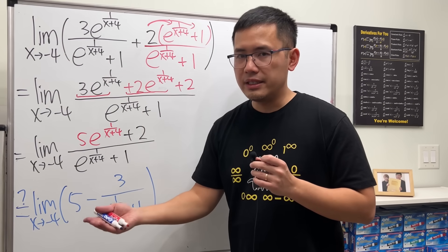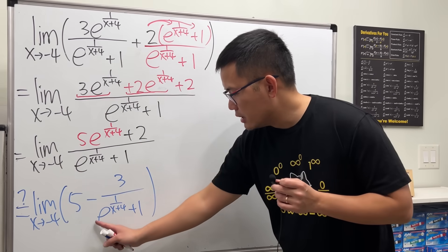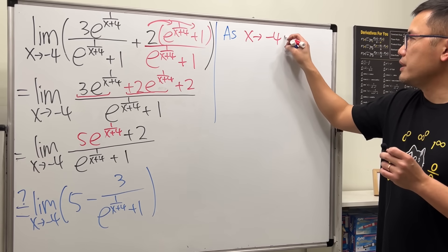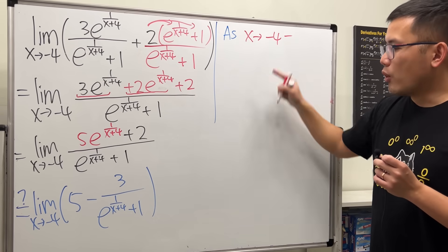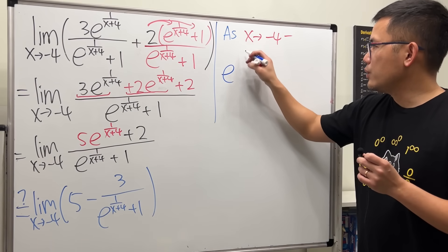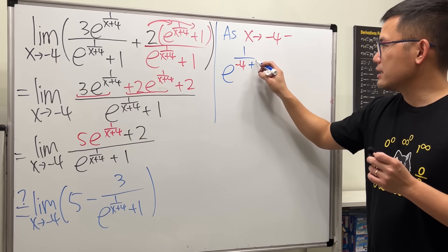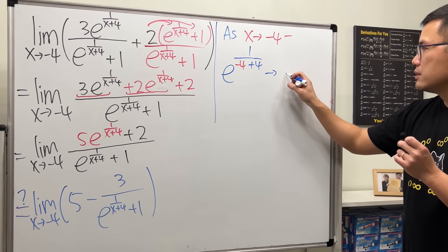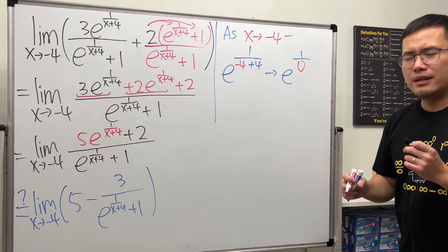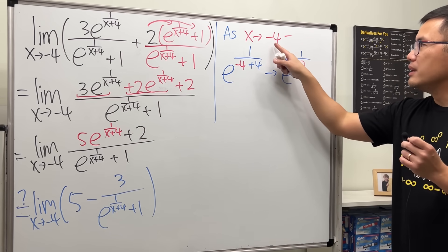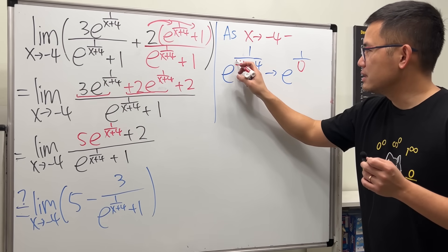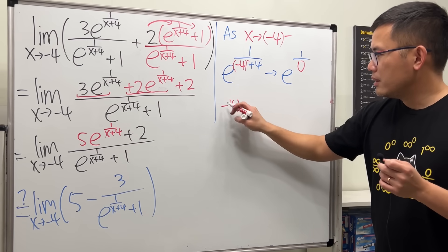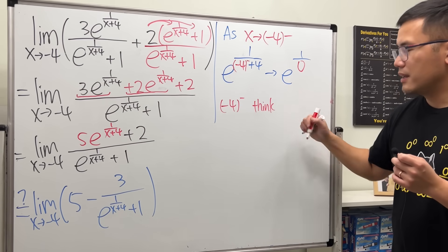Now let's check the limit as x approaches negative four from the negative side and from the positive side. I'm just going to focus on the function part first. As x approaches negative four from the negative direction, we put negative four inside: e to the one over negative four plus four. Negative four plus four is zero, so it's e to the one over zero. But be careful — it's negative four from the negative side, so the notation is more like x approaching negative four minus.